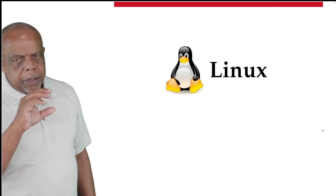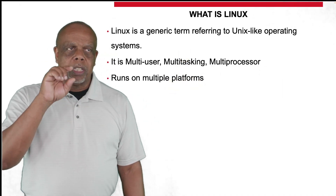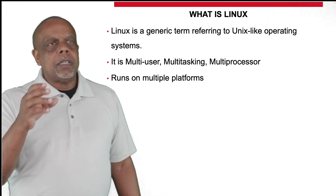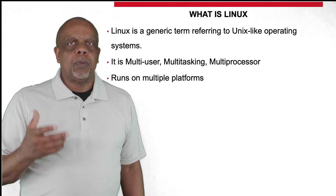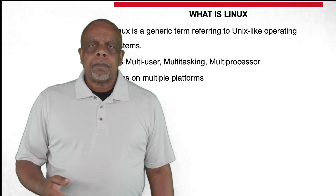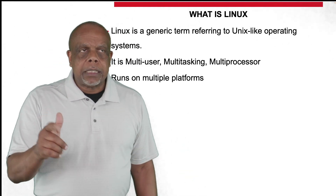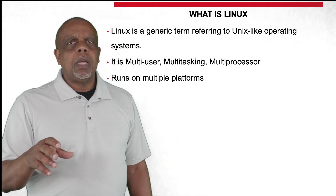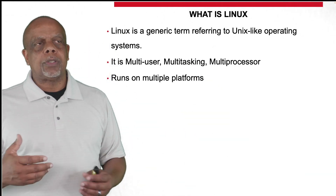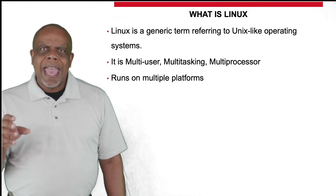Let's talk about the Linux environment. Linux is a generic term referring to a Unix-like operating system. It started with Unix — if something is Unix, that is proprietary, so you typically have to pay for it, whether it's Solaris or others. Mac OS is a Unix environment — that's why you don't get it free. Linux, on the other hand, is for the most part open source and you can obtain the distribution for free. It's a multi-user, multitasking, multi-processor system that can run on multiple platforms — a very agile operating system.